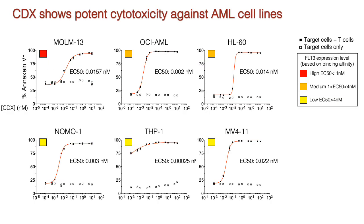We discovered and humanized several clones of anti-FLT3 antibodies. To avoid possible competition of FLT3 ligand, we selected a clone whose binding and function is not inhibited by the ligand. Here we show that in vitro treatment with CDX redirects primary human T cells to kill multiple AML-derived cell lines that express varying levels of FLT3, with EC50 ranging from 0.3 to 15 picomolar.